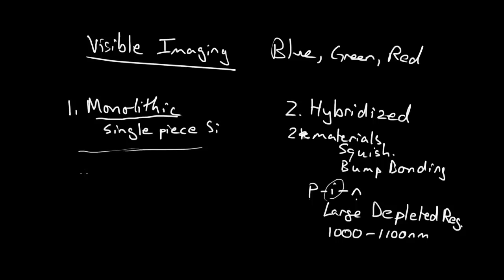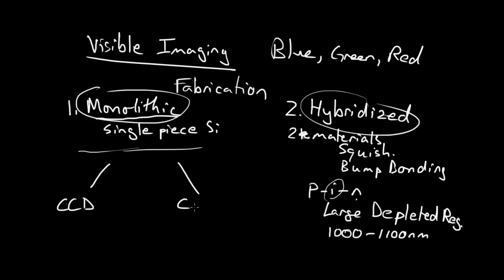So within the monolithic style, general type of architecture, or general fabrication style, so I would call the monolithic and hybridized fabrication styles. Within monolithic, there are two kinds: CCD and CMOS.